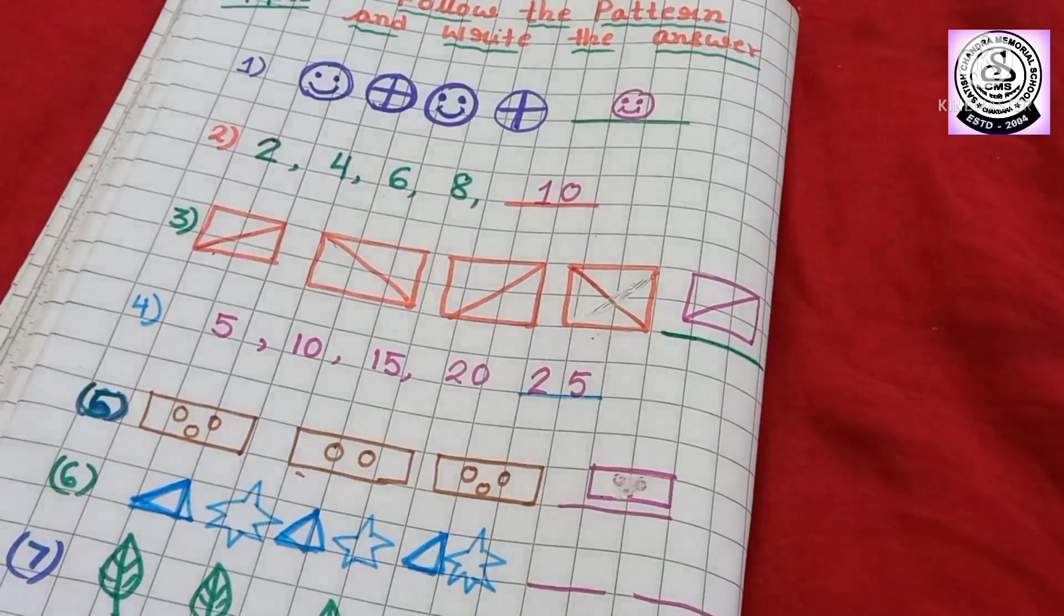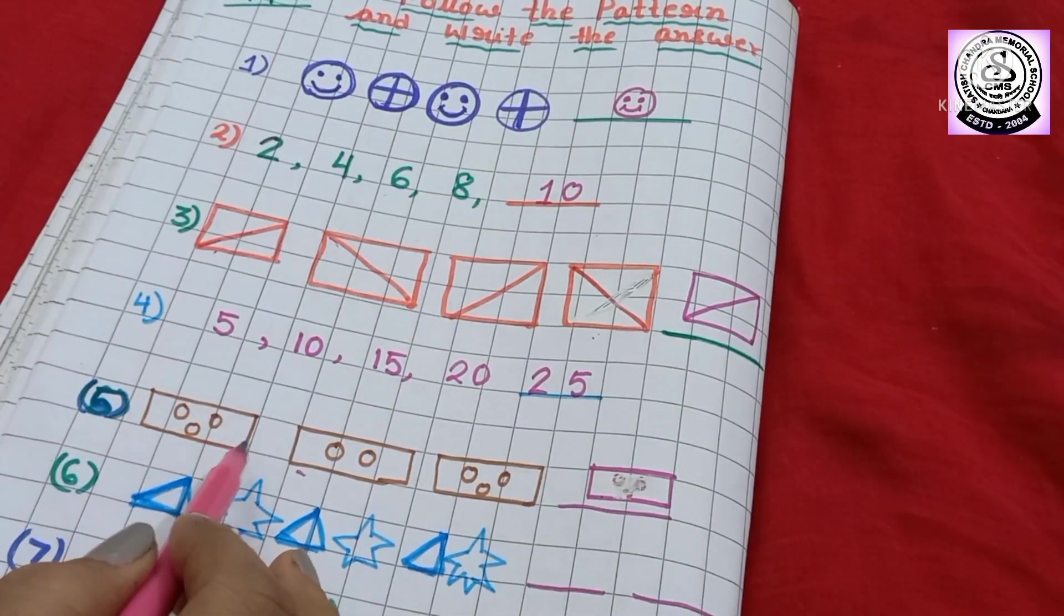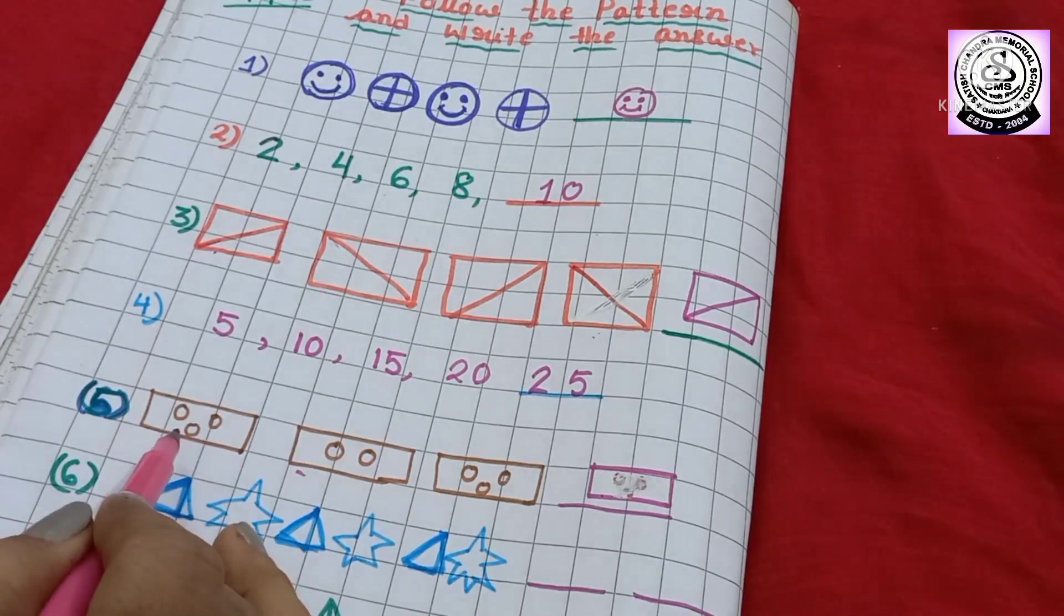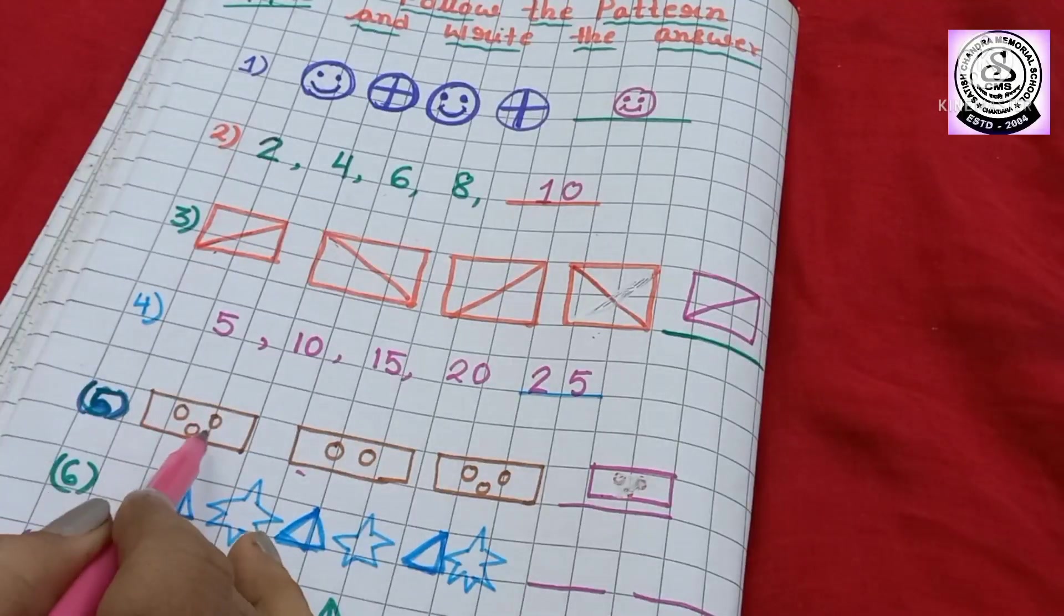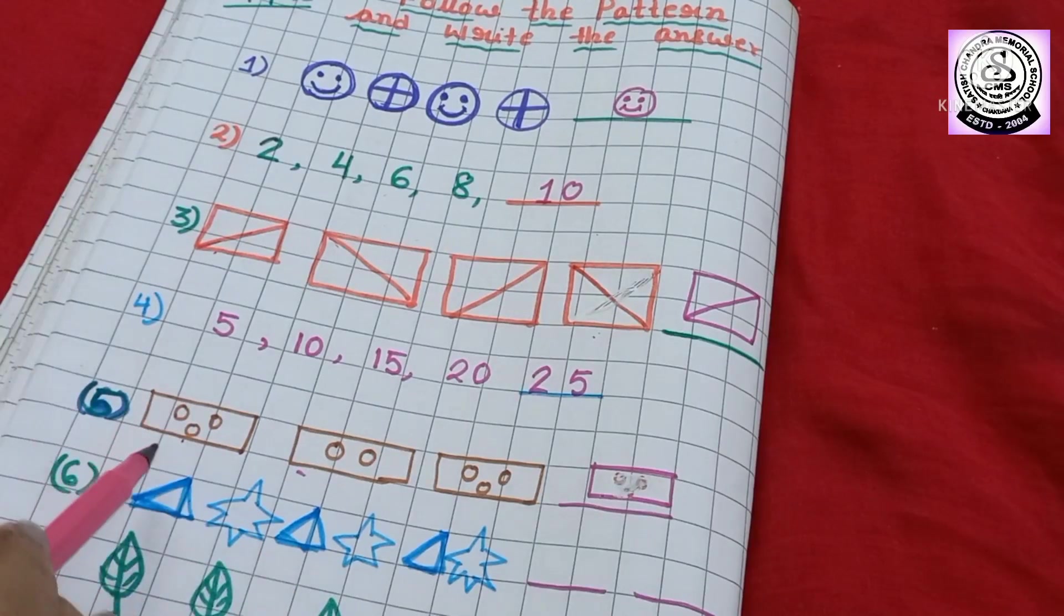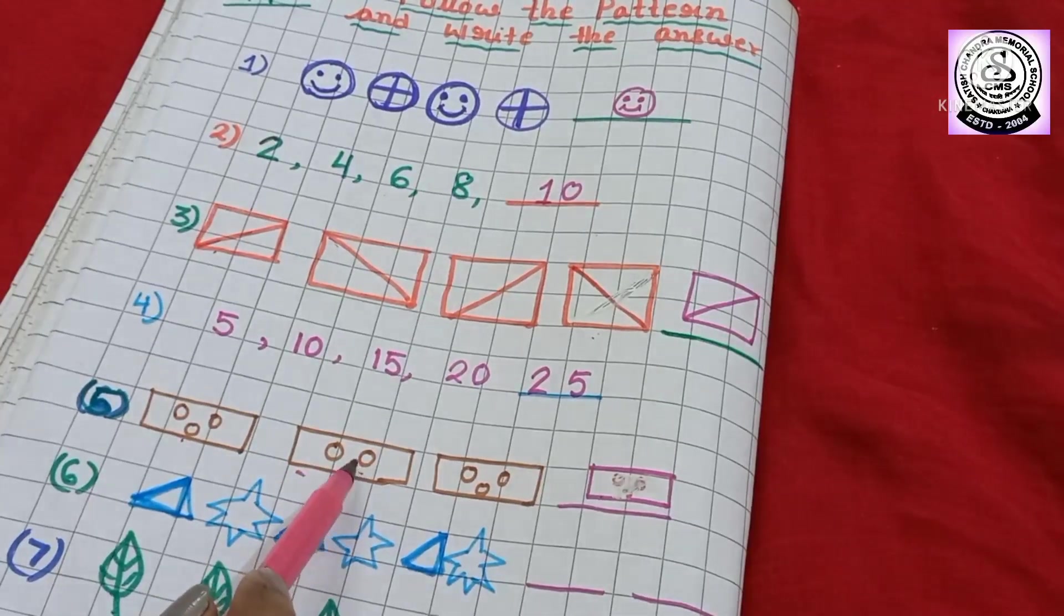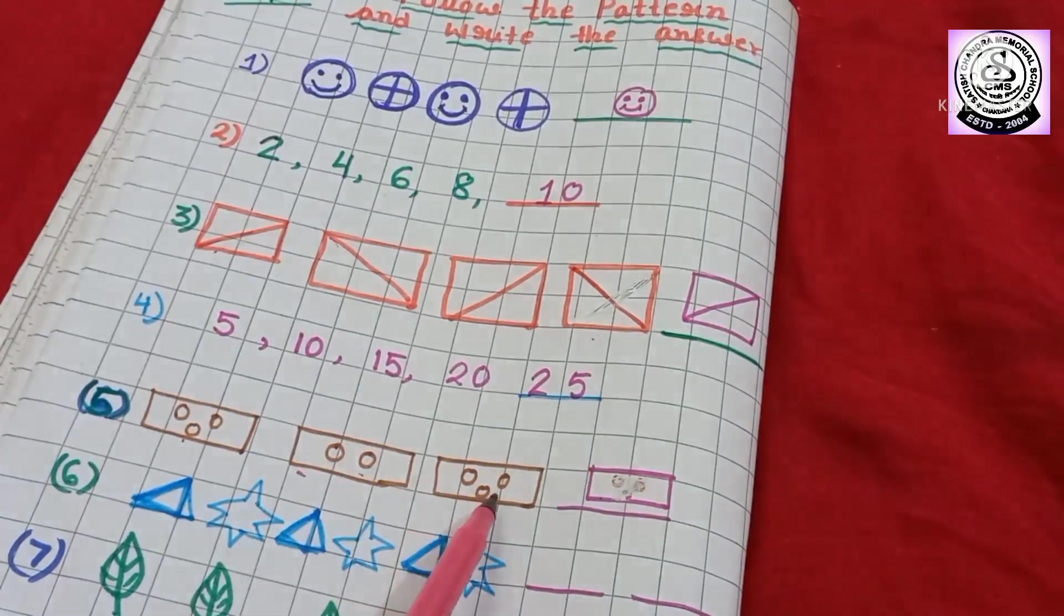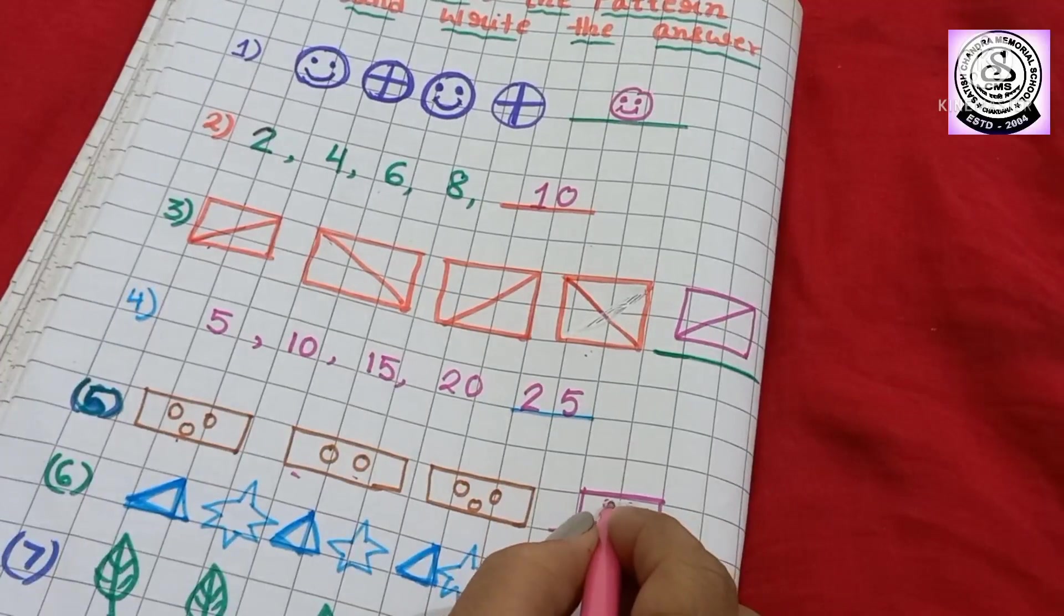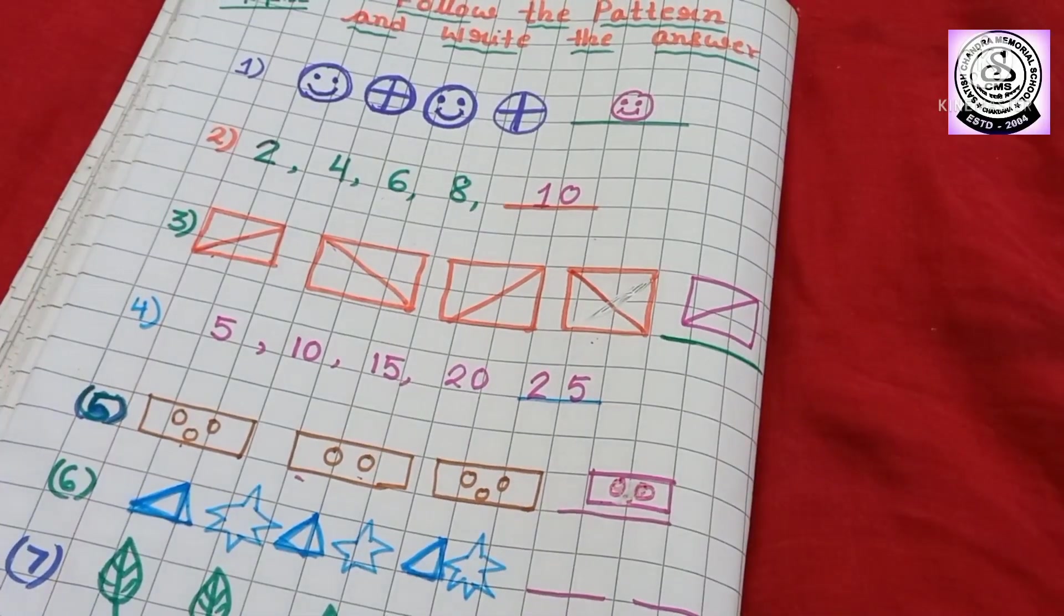So, number 5. Here, you can see, I have drawn one rectangle, and inside the rectangle, I have drawn small circles. 1, 2 and 3 circles here. And here, I have drawn 2 circles. And again, I have drawn 3. That means, here, I have to draw only 2 circles.